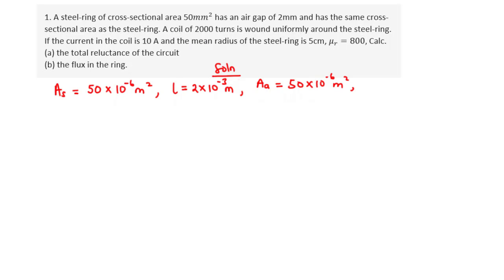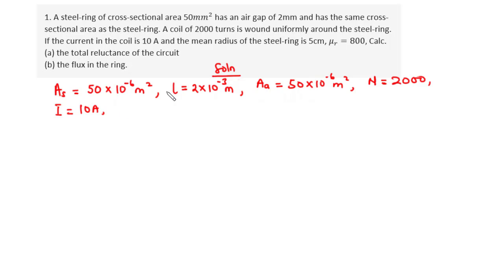The number of turns of the core is 2,000. The current in the core is 10 amperes. The mean radius of the steel ring is 5 centimeters. Converting to meters, we divide by 100, giving r = 5/100 = 0.05 meters.